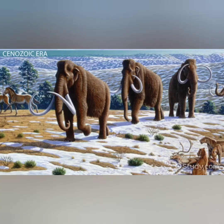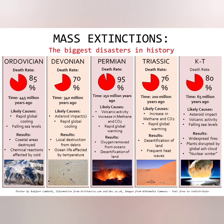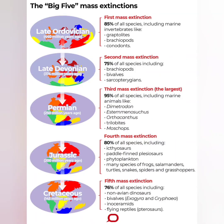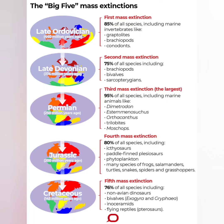The major events that occurred throughout the Phanerozoic Eon are: mass extinction events, major glaciation events, magnetic pole reversals, changes in climate, and changes in sea level. Mass extinction events are events when large numbers of species die. There have been five major extinction events and several smaller ones. The Big Five mass extinctions are: the first in the late Ordovician, the second in the late Devonian, the third in the Permian, the fourth in the Jurassic, and the fifth in the Cretaceous period.